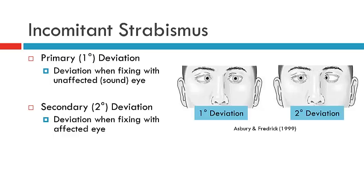In Incomitant Strabismus, we have a distinction between what we consider the primary deviation and the secondary deviation. Depending on which eye is fixing, there is a difference in the deviation we see. In Concomitant Strabismus, we didn't really discuss primary and secondary deviations because the deviation is the same no matter which eye is fixing.